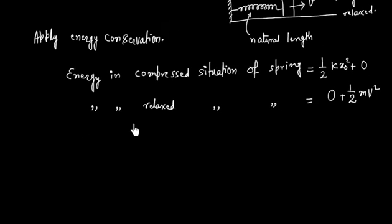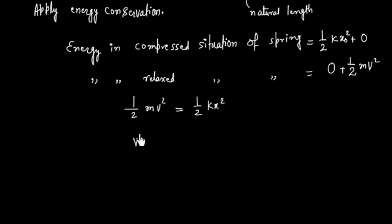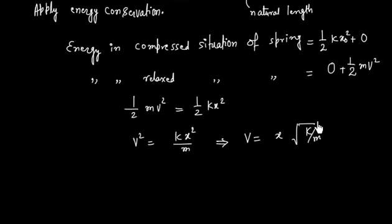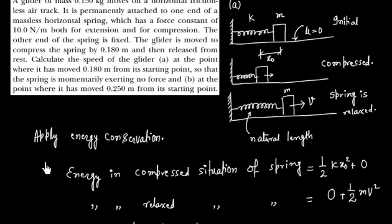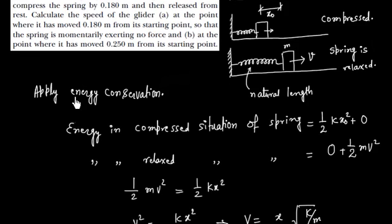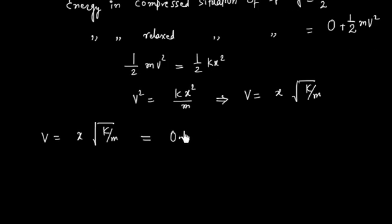We equate these two energies: half M V squared equals half K X squared. So V squared equals K X squared divided by M, giving us V equals X times the square root of K over M. Plugging in numerical values: X is 0.18 meters.